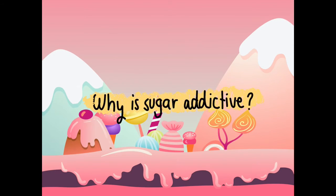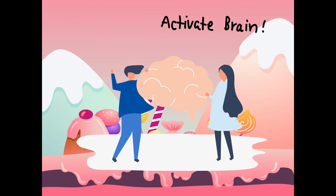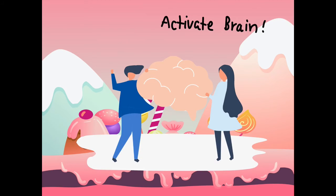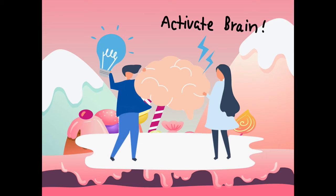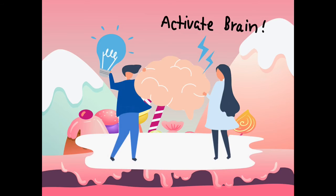Why is sugar addictive? First, sugar activates the brain's reward system — specifically the mesolimbic dopamine system, which has a powerful impact on the brain's reward pathway. The neurotransmitter dopamine is released by neurons in this system in response to rewarding events. This chemical circuit is activated by natural rewards and behaviors that are essential to continuing the species, such as eating tasty high-energy foods, having sex, and interacting socially.